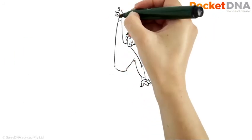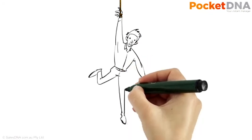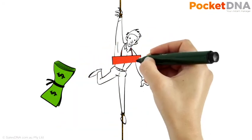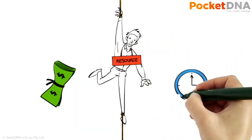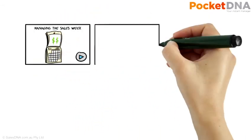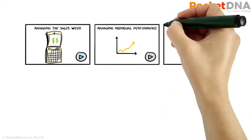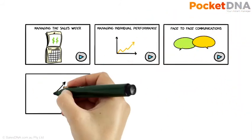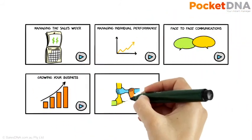PocketDNA helps businesses solve the problem of upskilling staff where budgets are tight, resources are stretched, and time out of the business is simply not an option. It provides you with a significant range of short, sharp, animated videos designed to suit the different ways people learn, grouped into logical categories.